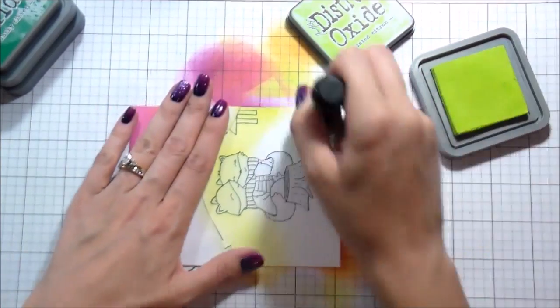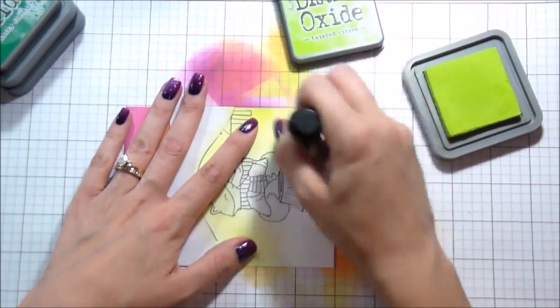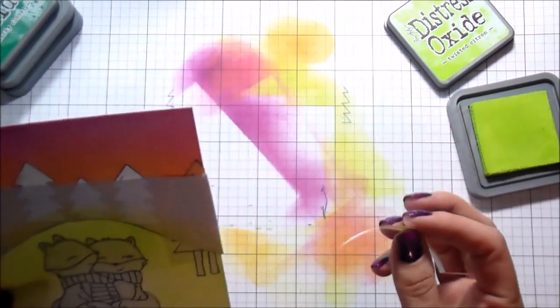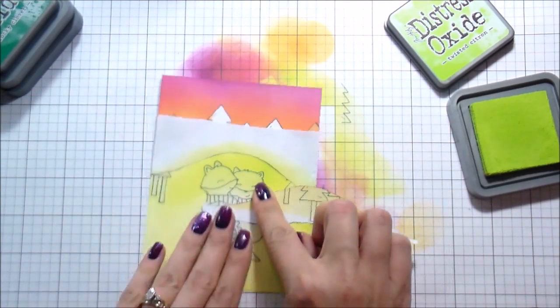Now we're going to do the bottom of it. So I picked a couple of different greens for the Distress Oxides. You can use Distress Inks or Pigment, whatever you have that you like to blend your backgrounds with. I chose Distress Oxides because I just like the way that they're really soft.